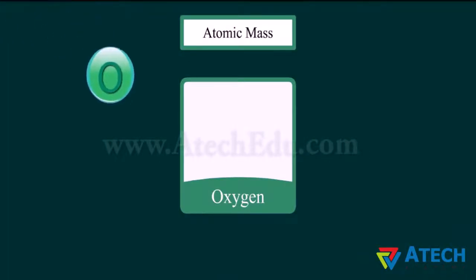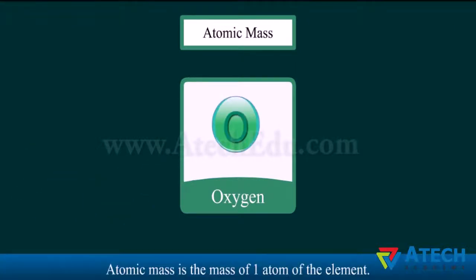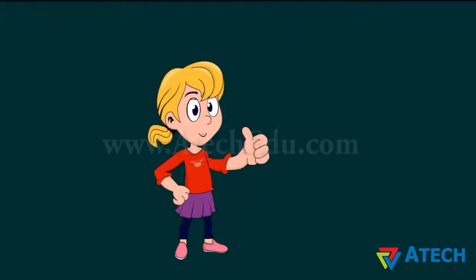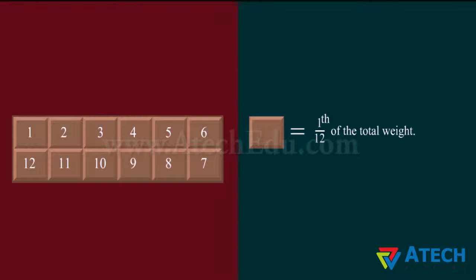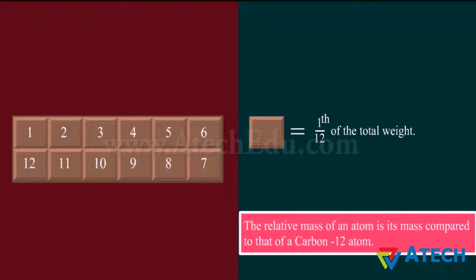What is atomic mass? Atomic mass is the mass of one atom of an element. But since an atom is extremely small, it is not possible to weigh atoms directly. To find the weight of an atom, we weigh it indirectly. The carbon-12 isotope was taken as the standard reference for measuring atomic masses. The relative atomic mass of an atom is defined as the average mass of the atom compared to 1/12 of the mass of one carbon-12 atom.